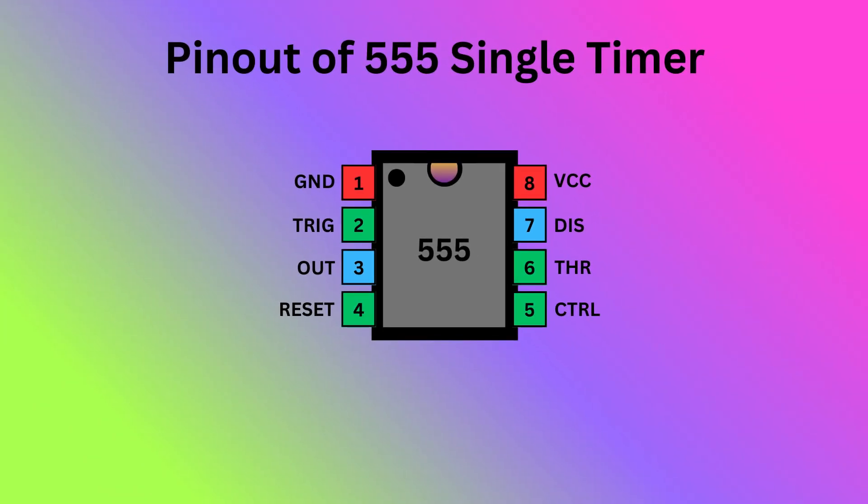The 555 timer IC comes with eight pins. There is a notch or a dot on the chip's body. Starting from the top left is pin 1, which is ground or the ground supply. Pin 2 is trigger. It is used to start the timing interval in both monostable and astable modes.